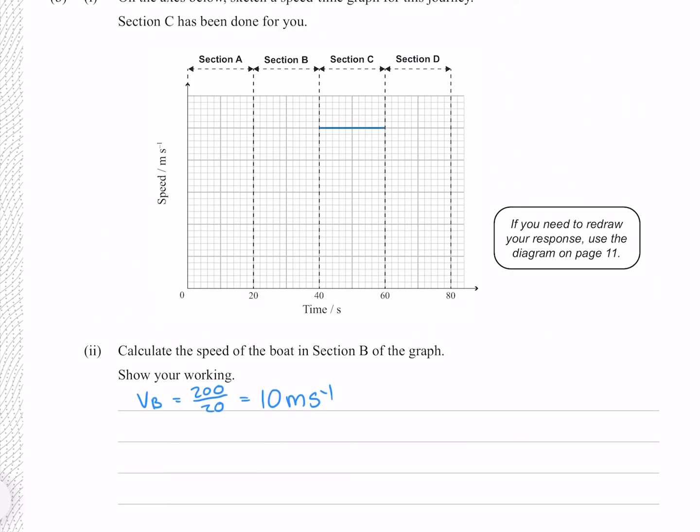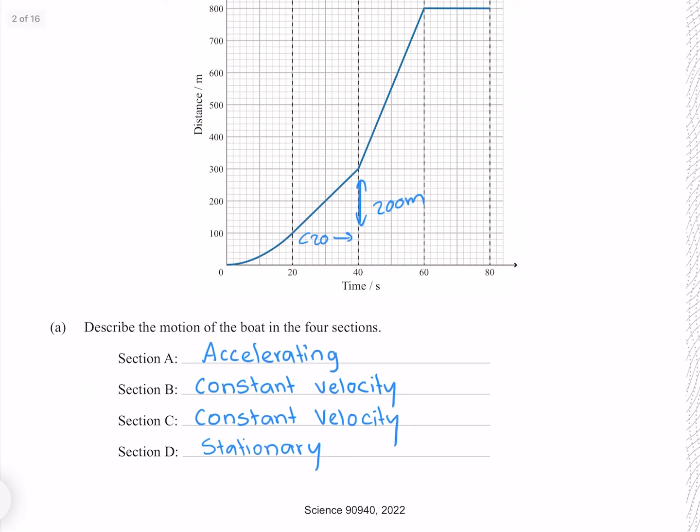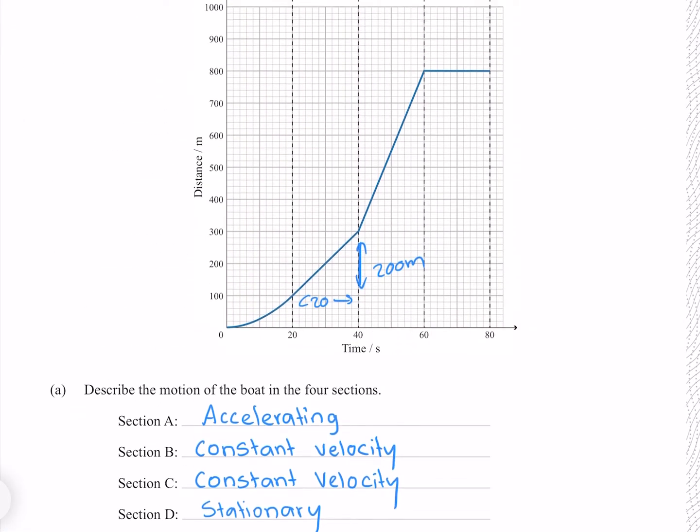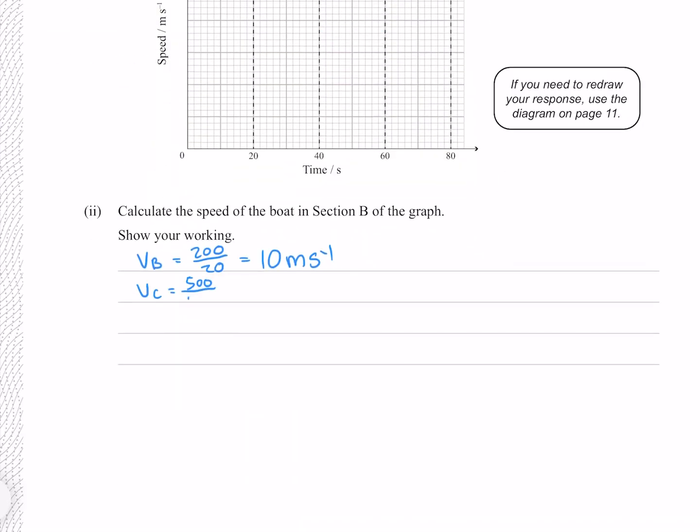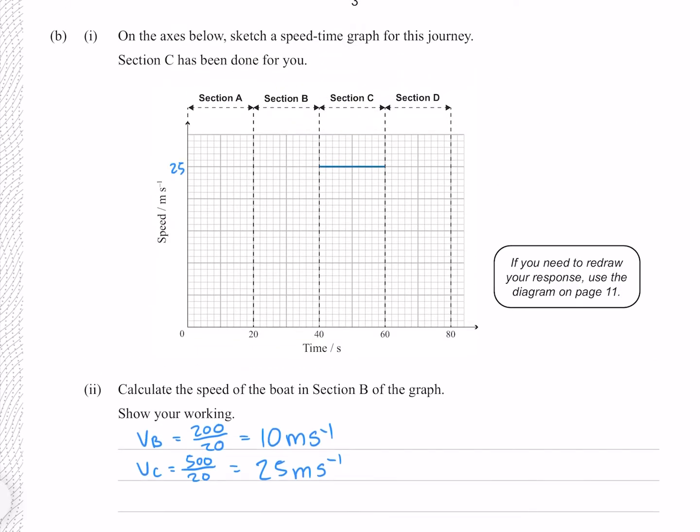And although section C has been done for us, it hasn't given us the scale. So let's find section C as well. Section C rises from 300 to 800, giving us a rise of 500 and the same run of 20 seconds, which gives me 25 meters per second. So if this is 25, we can look at our scale and see that it must be going up in fives.